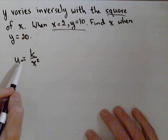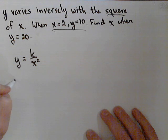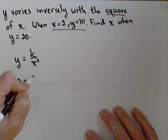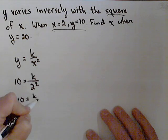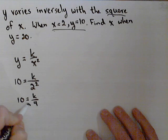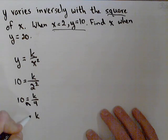Now we use this information to find k, because we know that y equals 10 when x equals 2. So we get 10 equals k over 4. We can cross multiply that 4, and we get k equals 40.